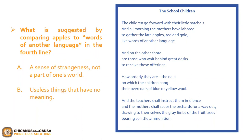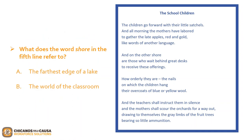Now that we have read example 6, let's answer the following questions. Question 1 asks: what is suggested by comparing apples to 'words of another language' in the fourth line? Is it A, a sense of strangeness, not a part of one's world? Or B, useless things that have no meaning? If you chose A, a sense of strangeness, not a part of one's world, you are correct. A language different from your own can seem strange and removed. The mothers feel removed from the world of teachers and school children. Question 2 asks: what does the word 'shore' in the fifth line refer to? Would it be A, the farthest edge of a lake? Or B, the world of the classroom? The correct answer is B, the world of the classroom — because the mothers in the poem think of schools as far away from them.